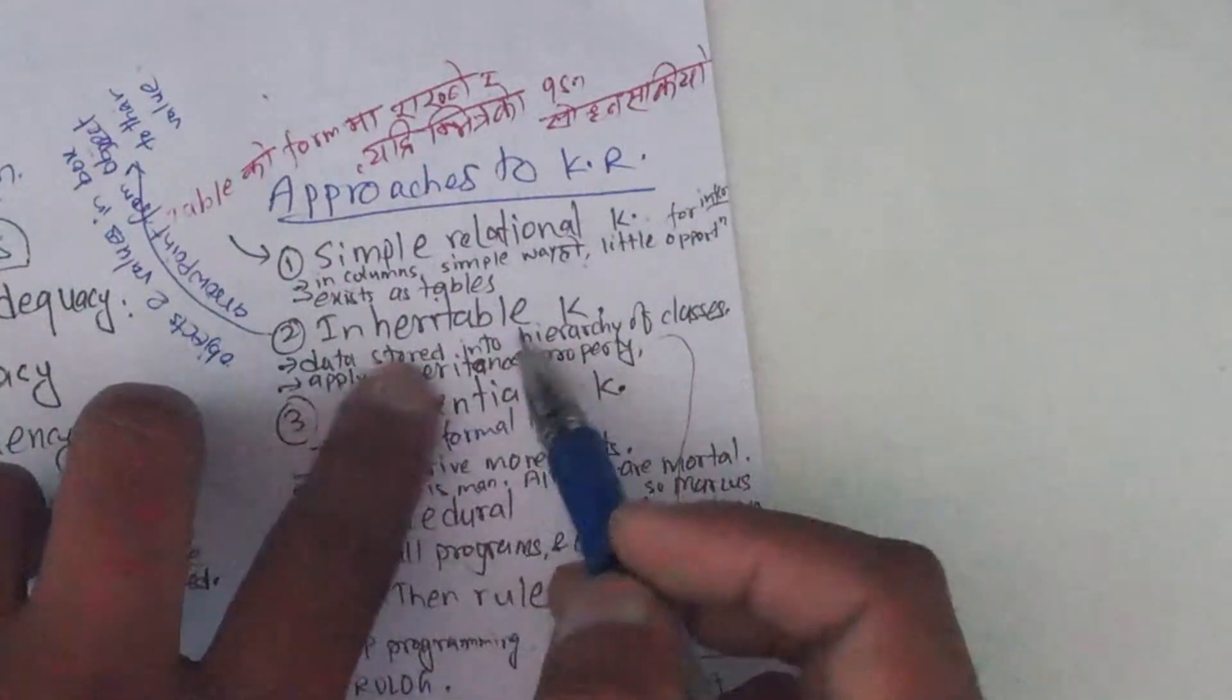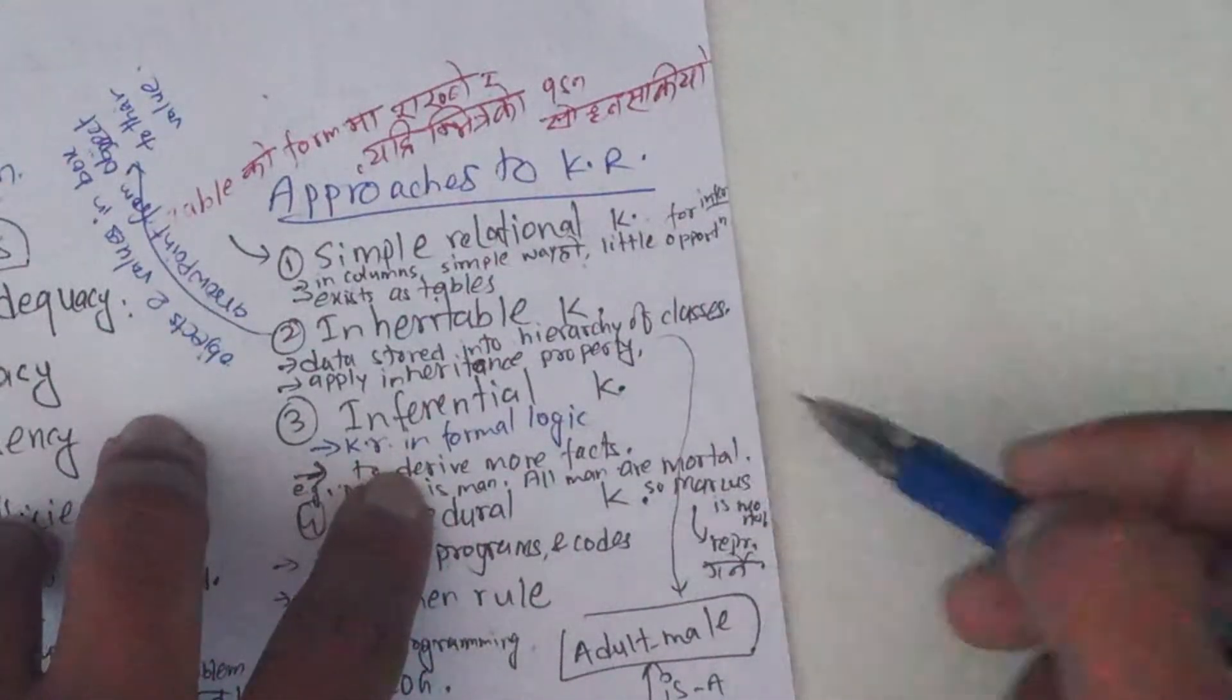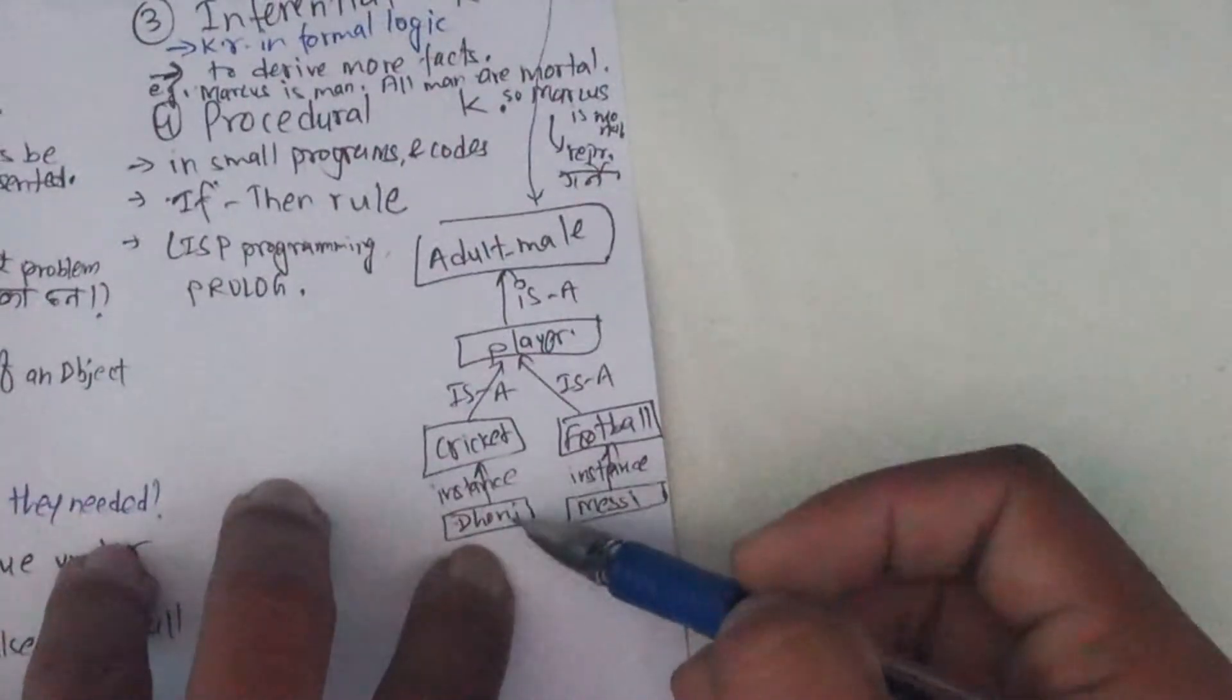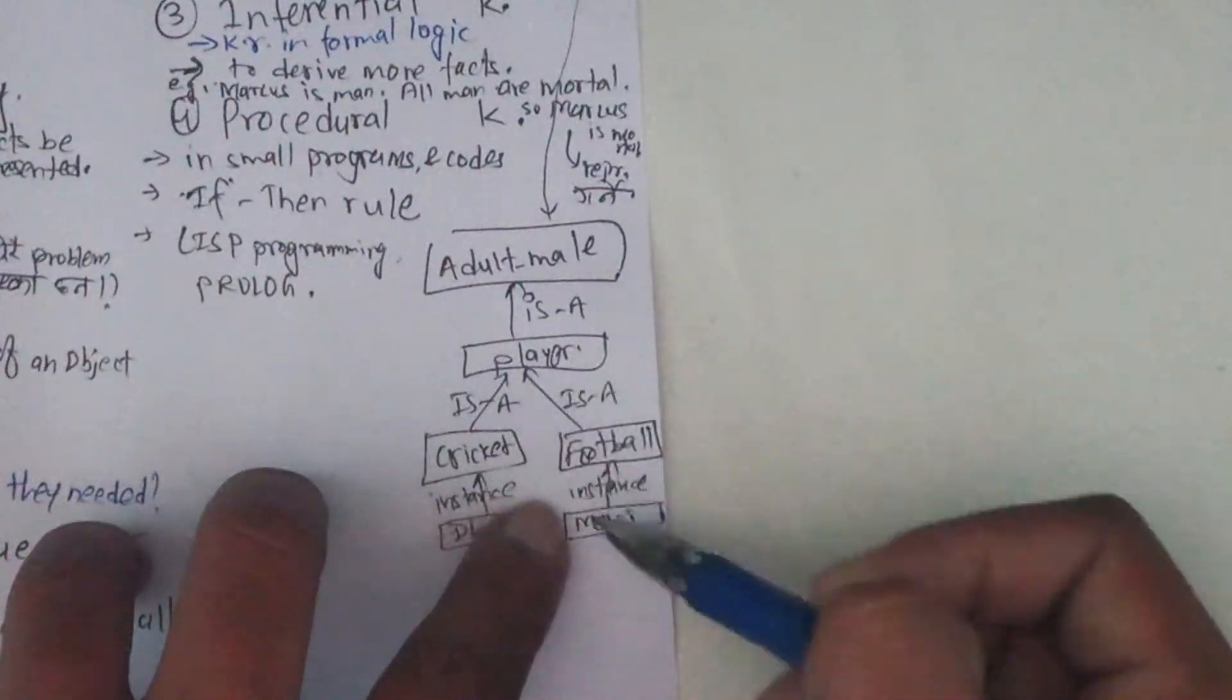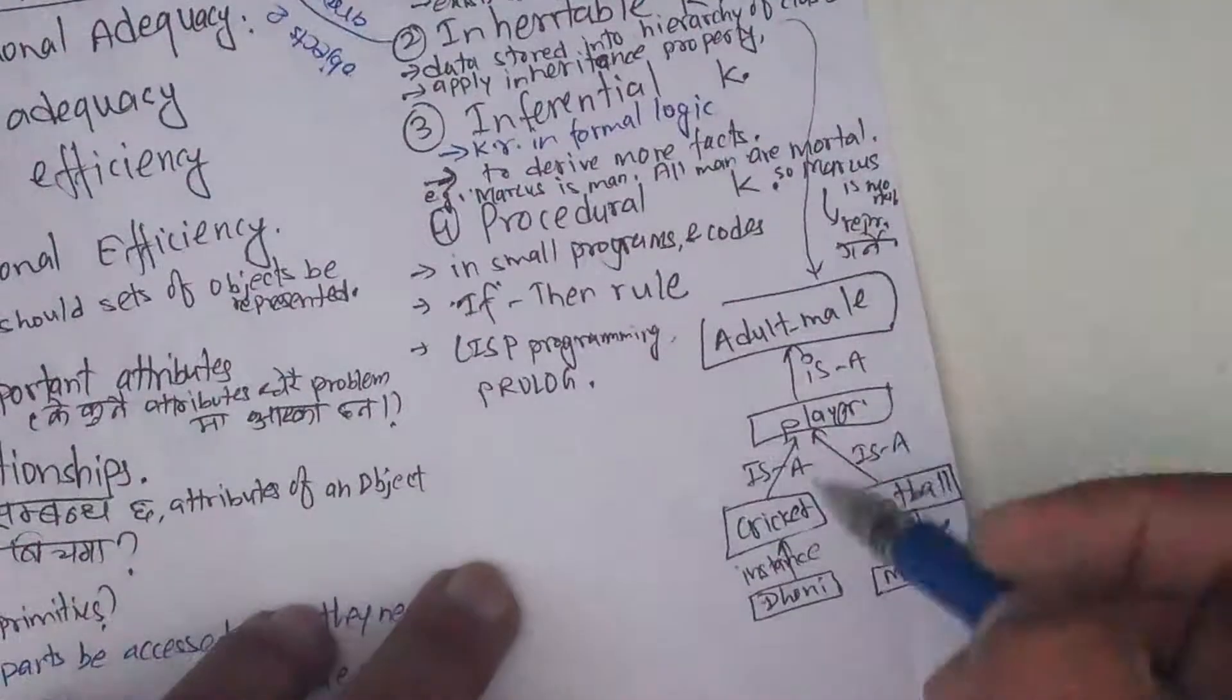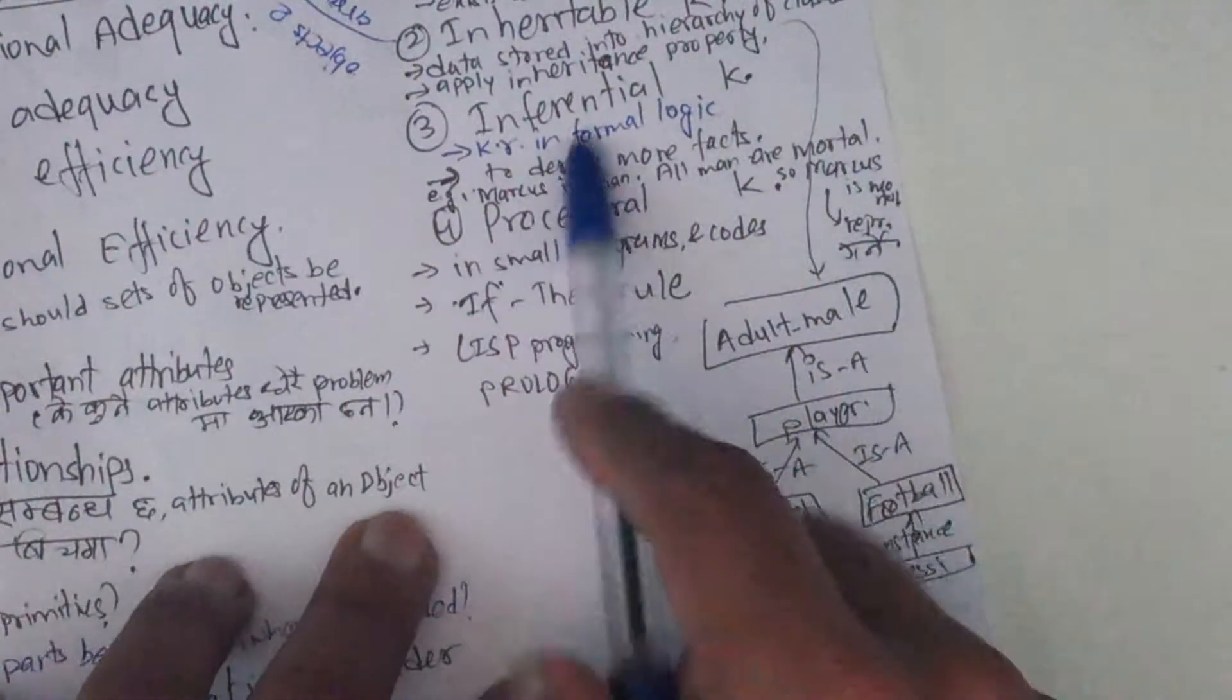Data is stored in hierarchical classes. Cricket is a player and football is a player. Messi is the instance of football. This is a simple example of representation knowledge - inheritable knowledge.